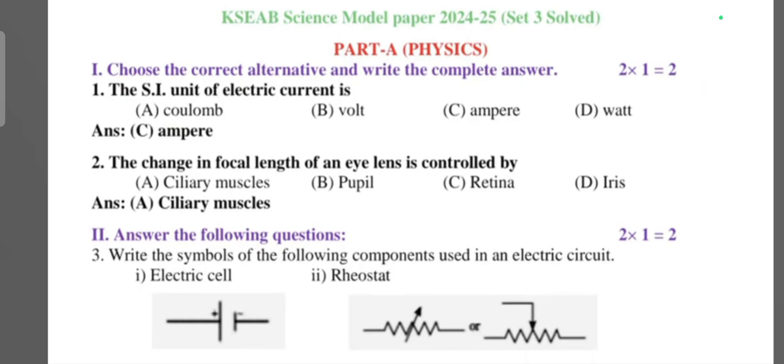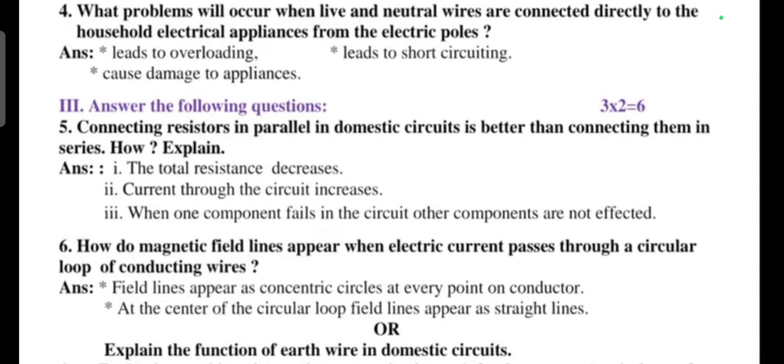Question number four: what problems will occur when live and neutral wires are connected directly to household electrical appliances from the electric poles? Answer: it leads to overloading, it's due to short circuiting, causes damage to the appliances. Next main, three mark, three questions, two each carries two marks. Fifth one: connecting resistor in parallel in domestic circuits is better than connecting them in series, how? Explain. Answer: the total resistance decreases, current through the circuit increases, when one component fails in the circuit other components are not affected.